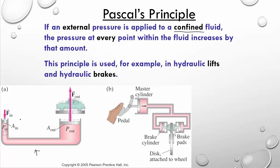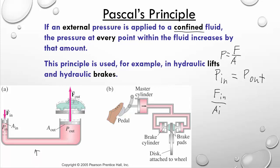So in the static case where the fluid is no longer moving, the pressure has to be equal. And what this allows us to do — if we know the pressure is equal at any point — we know the pressure on this piston has to equal the pressure on this piston. We label those pressure in and pressure out. Starting with the basic idea that pressure in equals pressure out, and applying the equation force over area, we can say: force on the input side over area on the input side equals force on the output side over area on the output side.